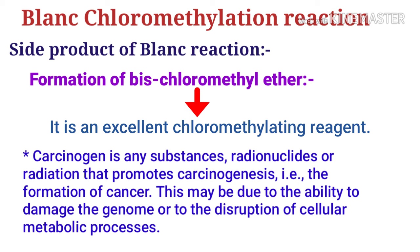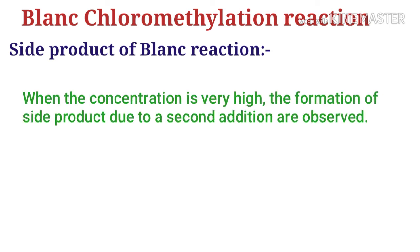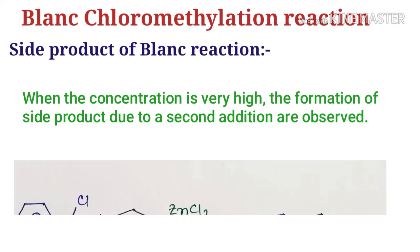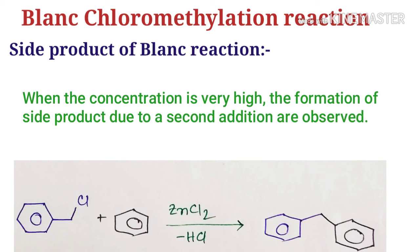A carcinogen is any substance or agent that promotes carcinogenesis — that is, the formation of cancer. This may be due to the ability to damage the genome or to the disruption of cellular metabolic processes. Another side product is observed when the concentration is very high: the formation of a second addition side product is observed, and the structure of that side product is also shown.